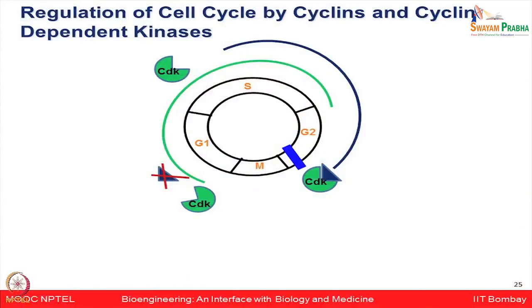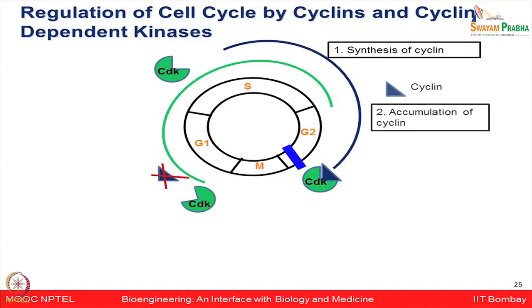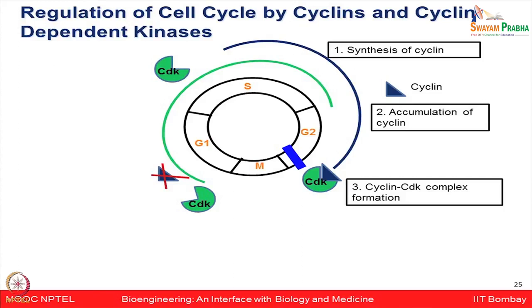This intricate cell cycle process is governed by certain proteins. A set of proteins known as cyclins and cyclin-dependent kinases (CDKs) play an important role. Cyclins are synthesized in S phase, accumulate as the cell moves into G2, and then interact with CDKs to form a CDK-cyclin complex. This ensures the cell is ready to enter the mitotic process.